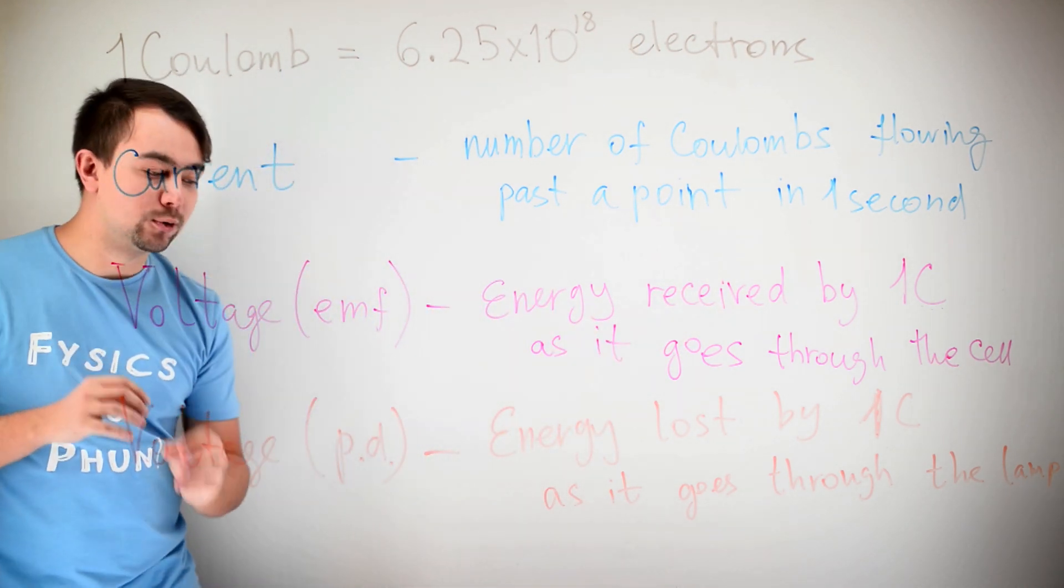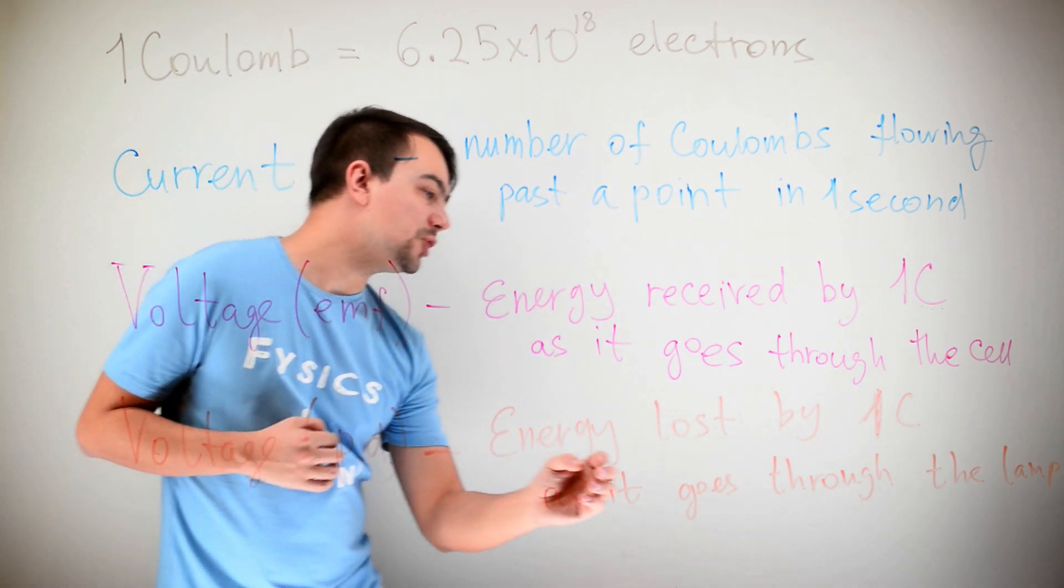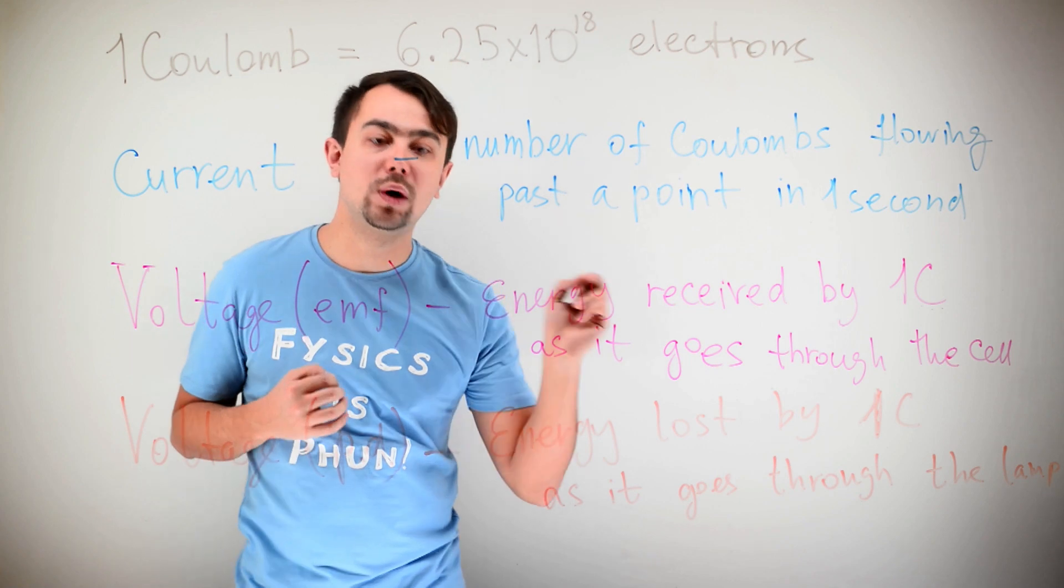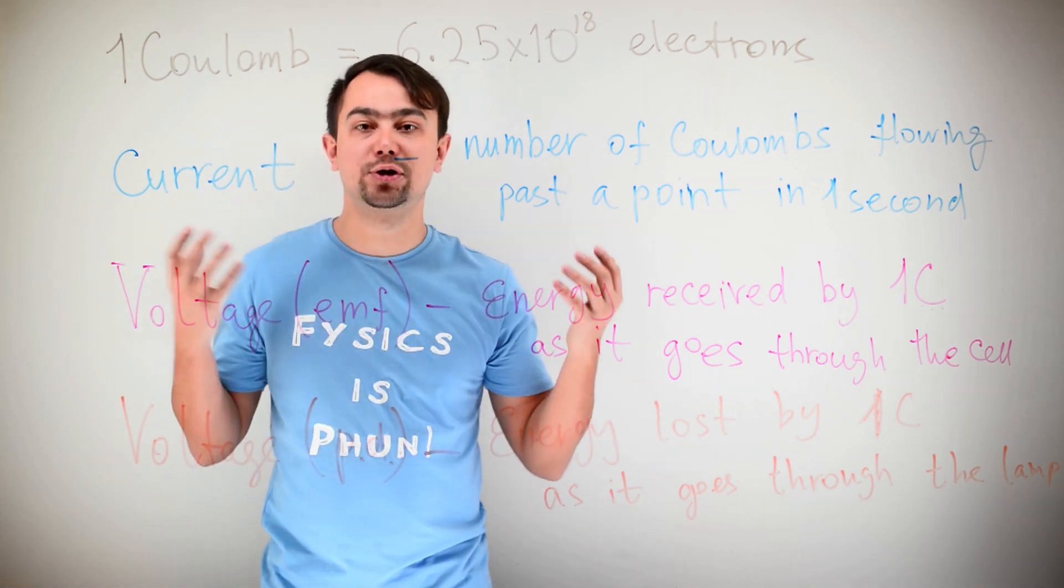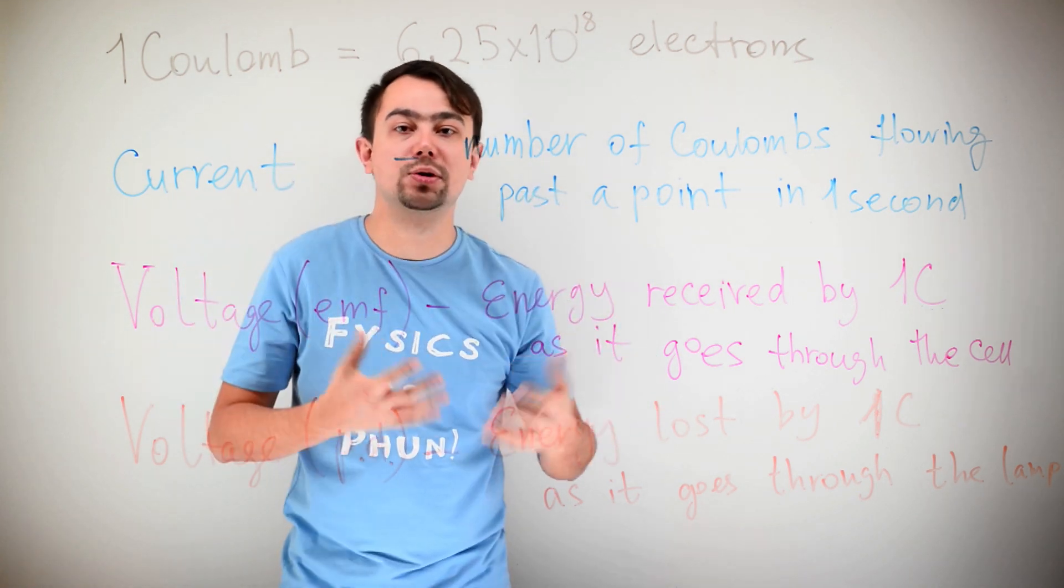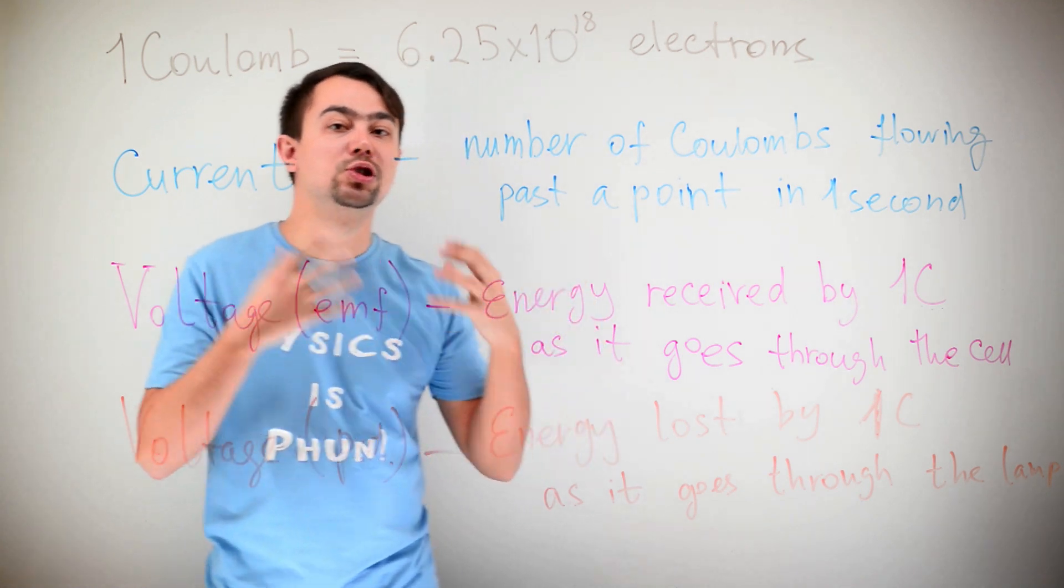The second type of voltage is PD, potential difference. It's the energy lost by one Coulomb of charge as it goes through the lamp. Well, it doesn't have to be a lamp. It could be an electric motor or any element of the circuit where the electrons lose energy.